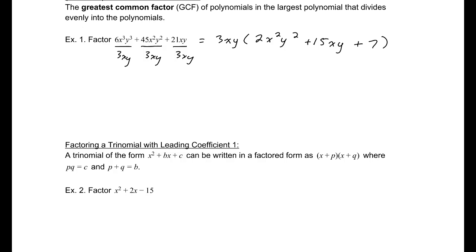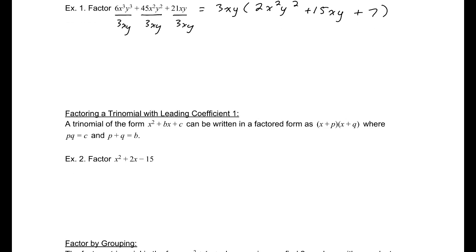So if we have a trinomial with a leading coefficient of 1, that is it's of the form x² + bx + c, it can be written in a factored form as (x + p)(x + q), where p times q equals c, and p plus q equals b. That is, these two numbers are chosen so that they multiply to be our constant term, and they add to be our x term's coefficient. So if we go to look for numbers that multiply to be -15, but we want them to add to be 2.